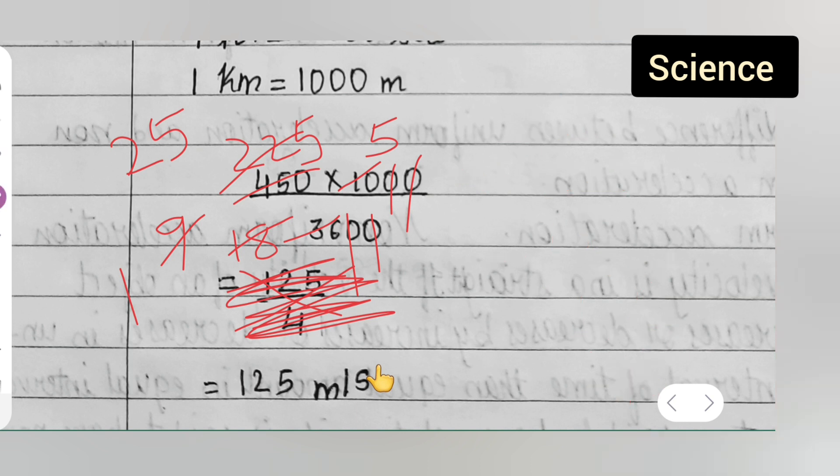Then what you will have to do is multiply this 25, multiply it with 5. So 5 fives are 25, 5 twos are 10, 11, 12. So what is the answer? You have to multiply this 25 with 5, so we will get 125 meter per second.